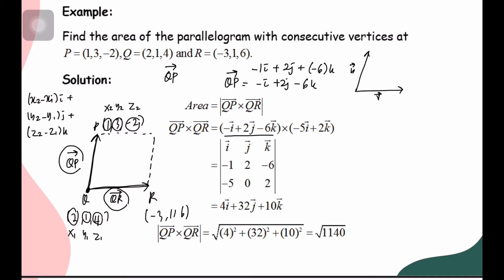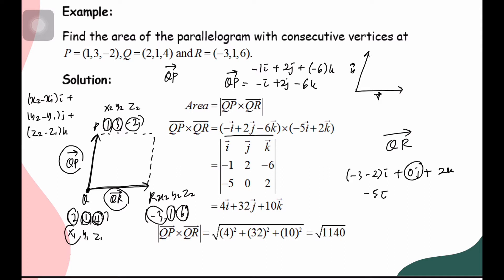To find vector QR, the direction is from Q to R, so Q is (x1, y1, z1) and R is (x2, y2, z2). We compute (−3−2)i + (1−1)j + (6−4)k = −5i + 0j + 2k. So QR = −5i + 2k.